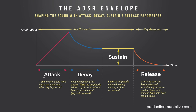Attack determines the time we need to get from zero to our maximum amplitude. If I am hitting my piano really hard, that attack time is very quick — very short. Hitting something hard means a very short attack time. Like if we are playing strings and they are coming in very smooth, like a violin, then you have a longer attack time. It takes a while until we are reaching the maximum amplitude of the sound.